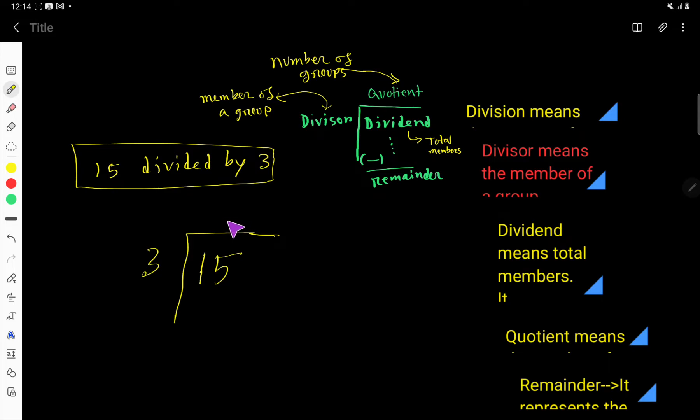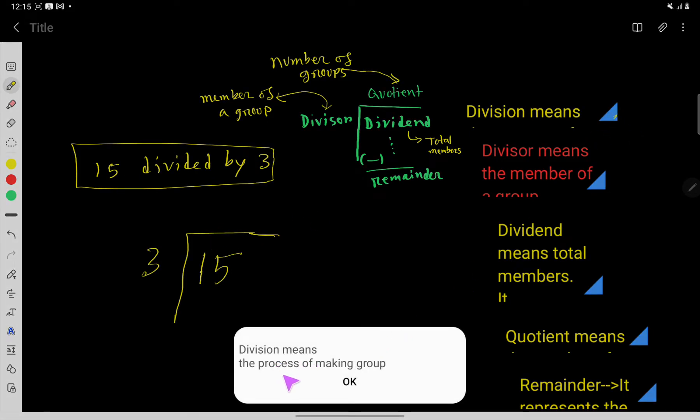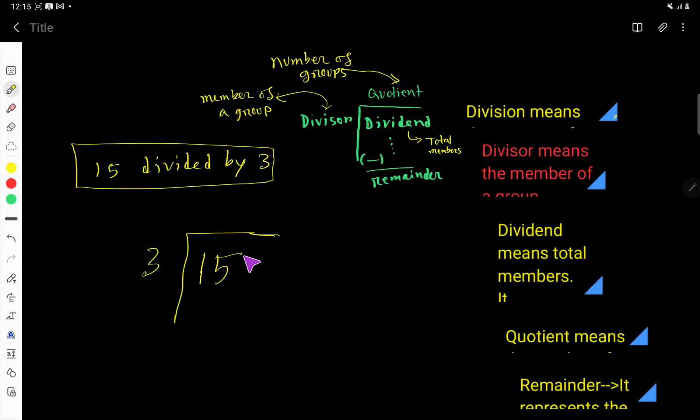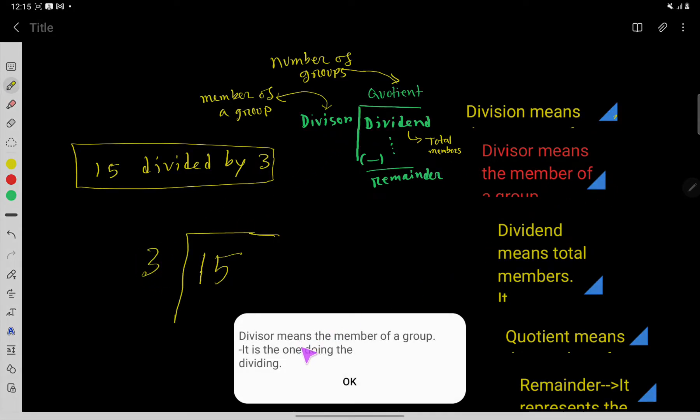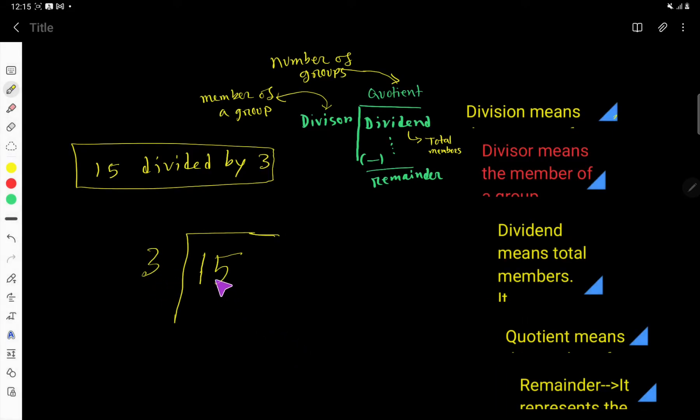At first, let me give you some basic knowledge about division. What do you mean by division? Look, division means the process of making groups. That is, in division process we produce groups. What is divisor? Look, divisor here is 3. Divisor means the member of a group, that is, it is the one doing the dividing.